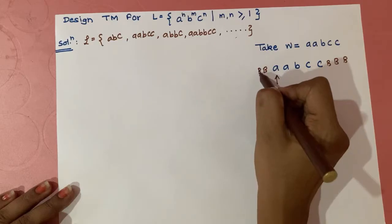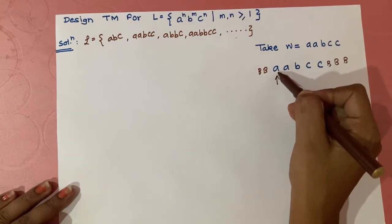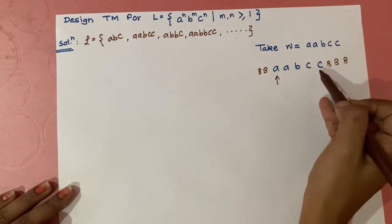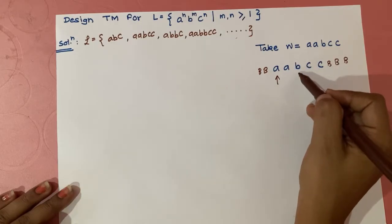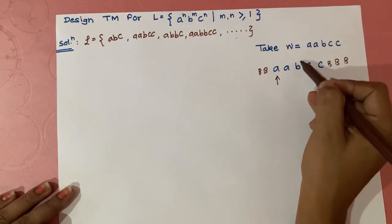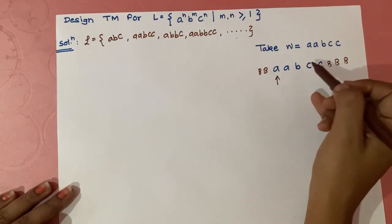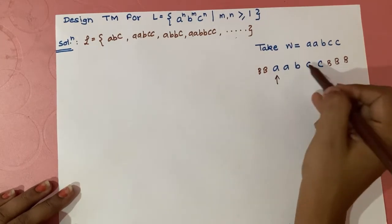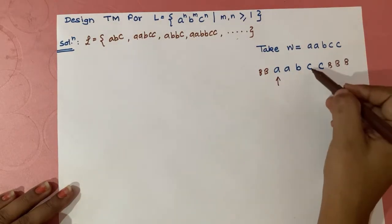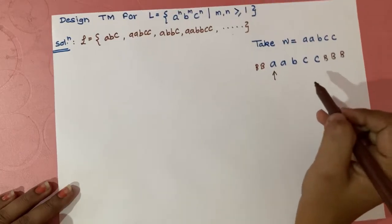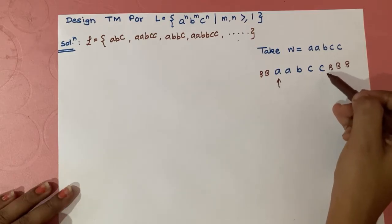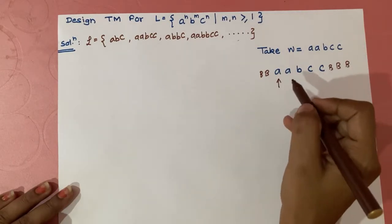The blank symbols are represented by 'B.' The header starts at the first 'a.' We have to match the number of a's with the number of c's, and we don't need to match the number of b's with any symbol. Whenever we encounter b's, they will be replaced with b's only. While matching, a's will be replaced with 'x' and c's will be replaced with 'y.' At the end, when we finish all a's, the c's should also be finished.